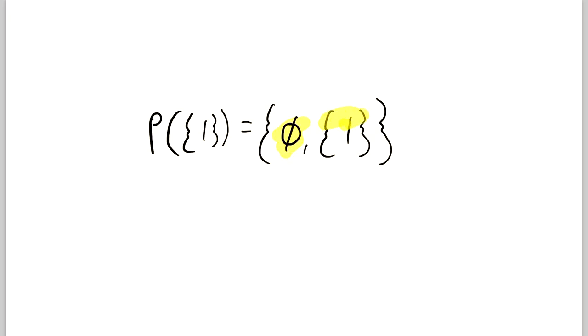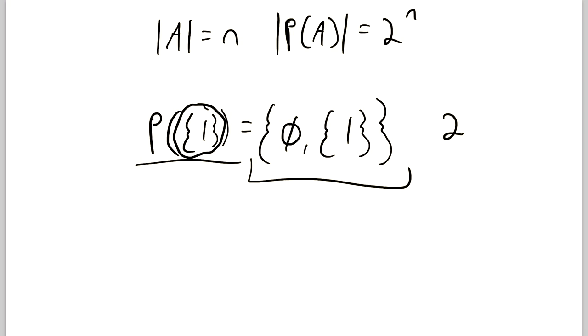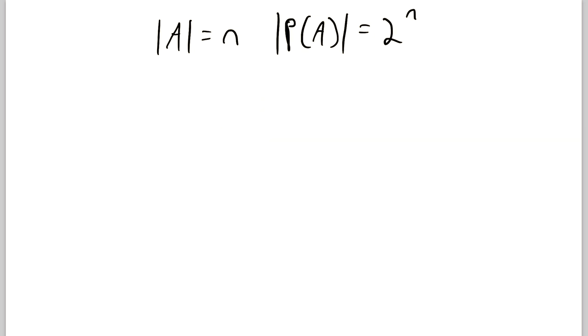These are the only two subsets of the set containing 1. And remember the handy dandy rule that if the cardinality of a set A is equal to n, then the cardinality of the power set of A is equal to 2 to the power of n. So of course, in this case, our set has one element. And so its power set has 2 to the power of 1 elements, which is just equal to 2. So let's just get this example out of the way.